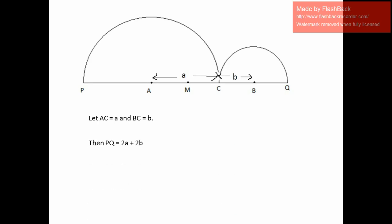Then PQ = 2a + 2b. Further, MQ = MC + 2b, which gives us MC = MQ - 2b.